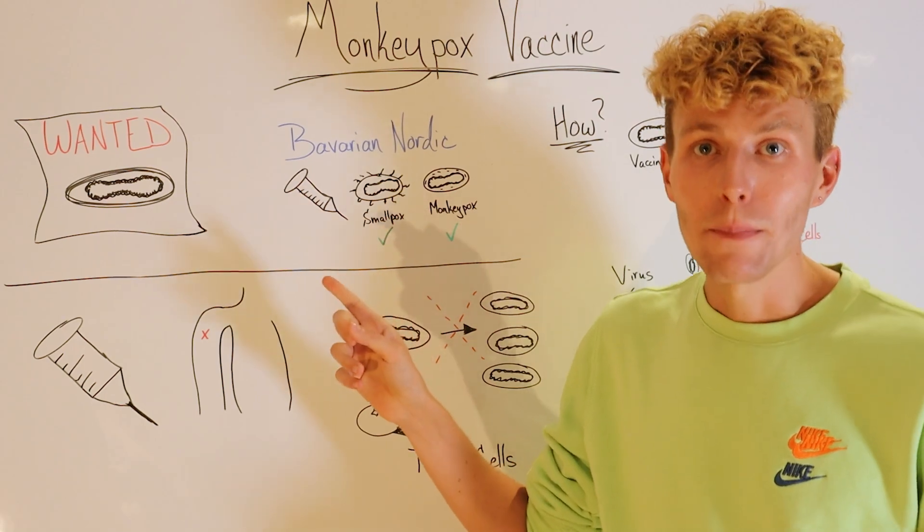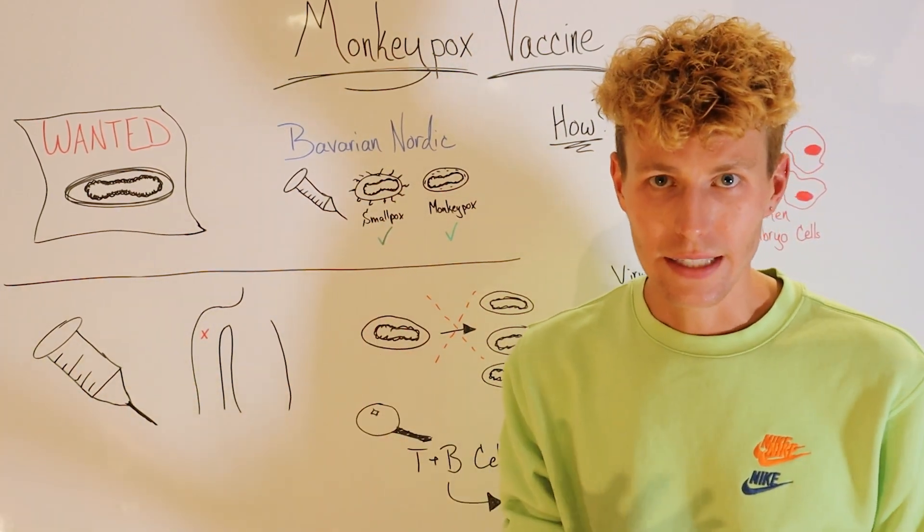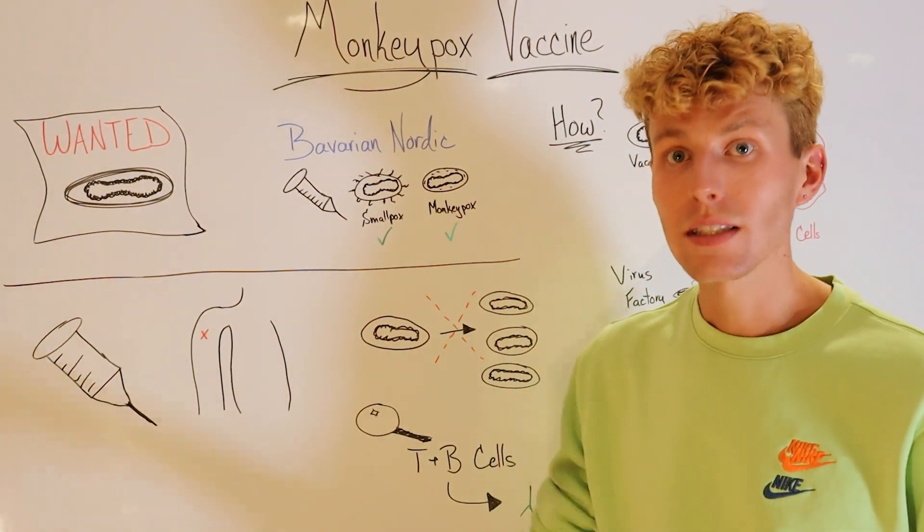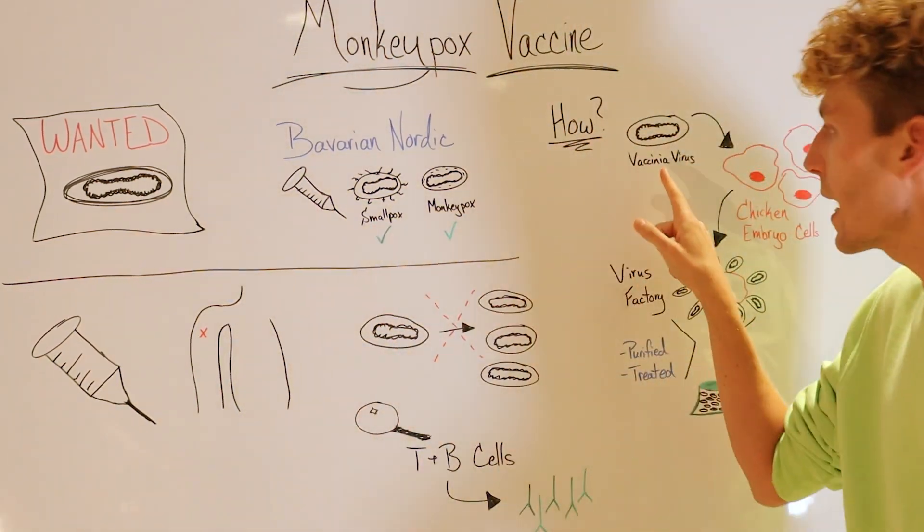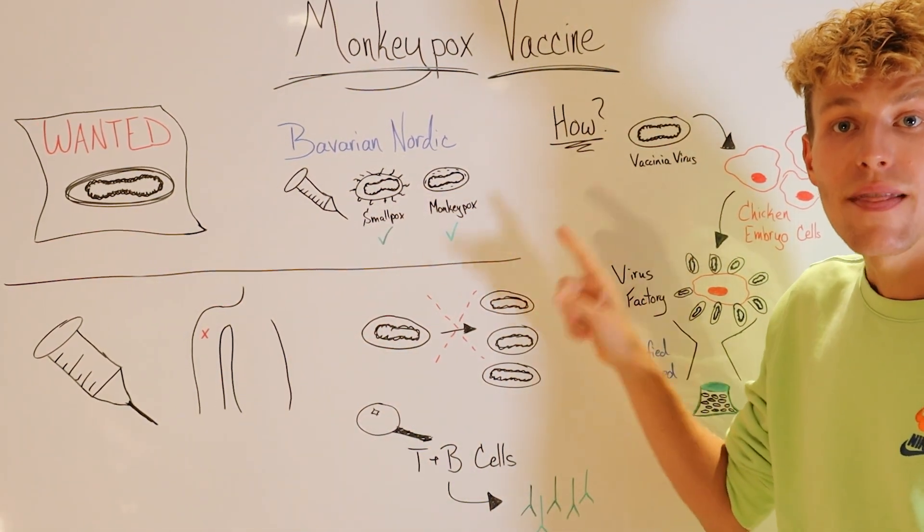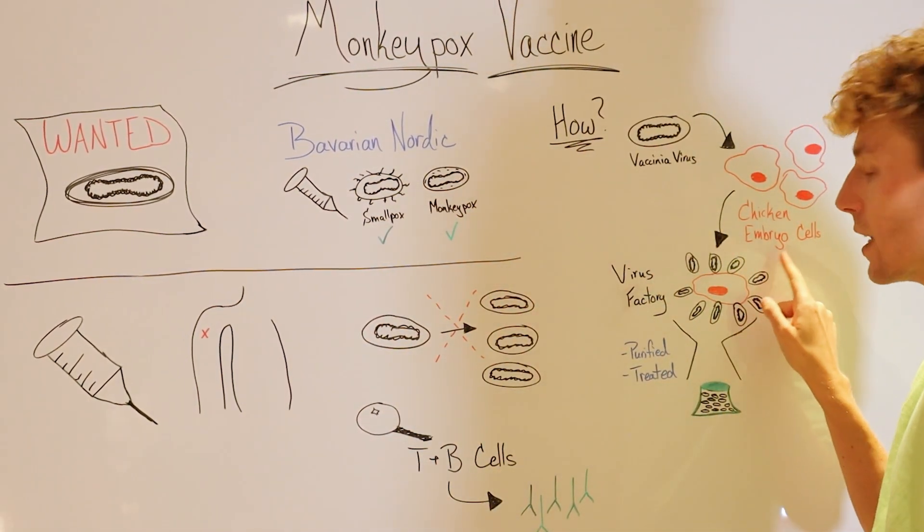So the way that this company was able to generate their vaccine is they used another virus as part of this family, called a vaccinia virus, and they used it to infect chicken embryo cells.